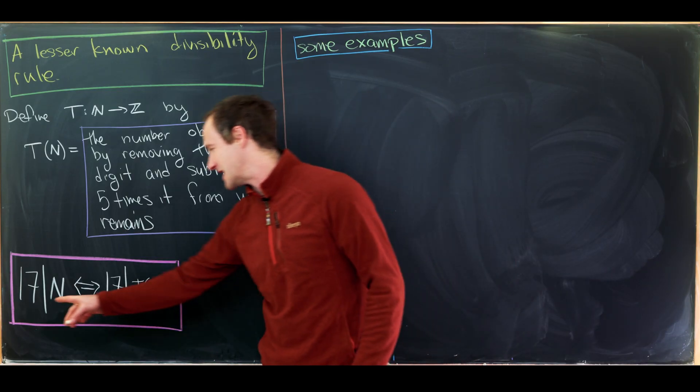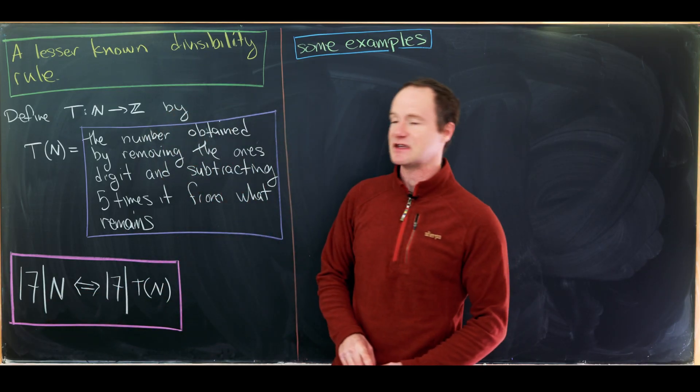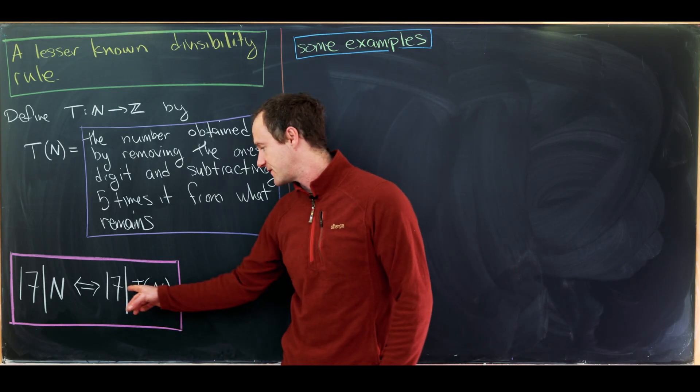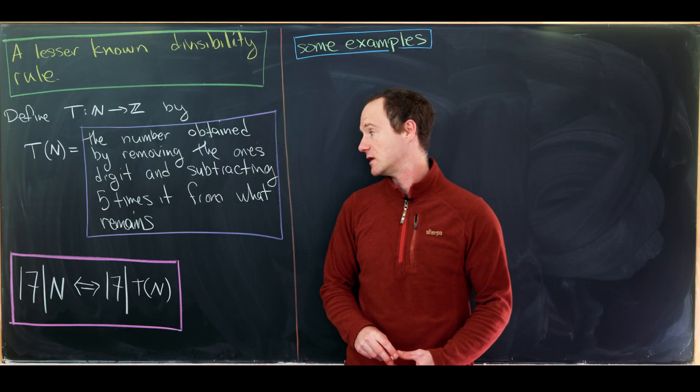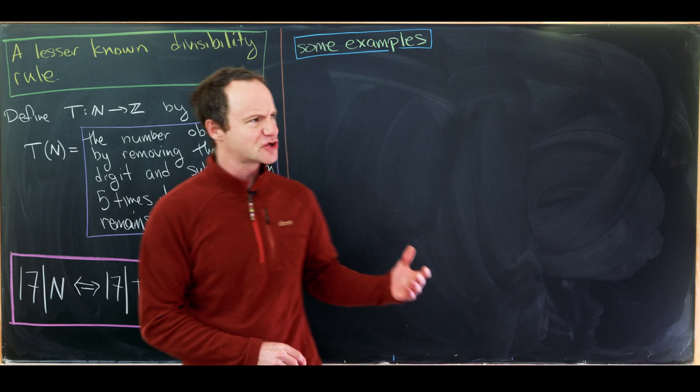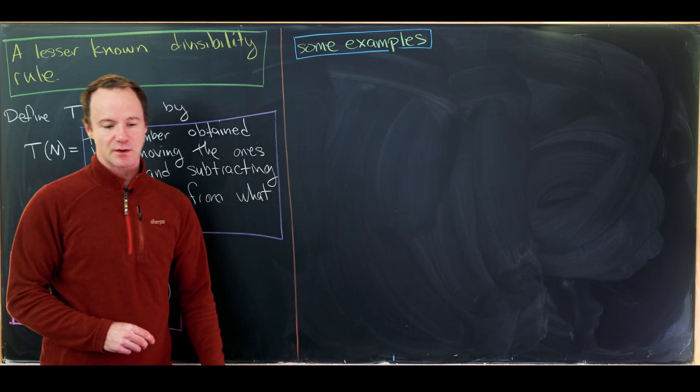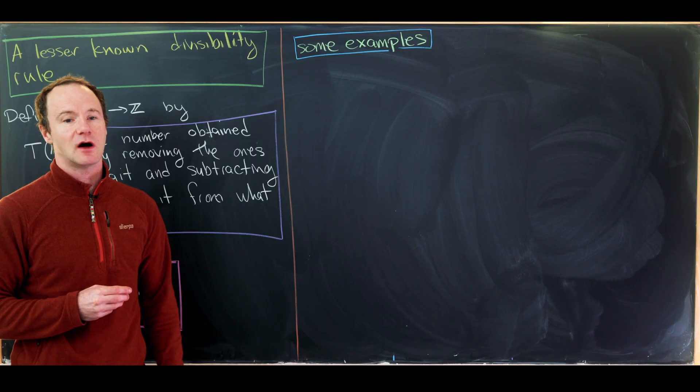And the result is that 17 divides the original number if and only if 17 divides the transformed number. So let's start off with some examples of what's going on here so we can get a handle on this transformation.